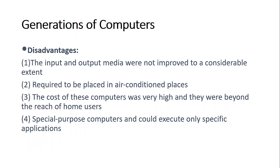The second generation had some disadvantages. This was the era where we had input and output devices, but they were not really practical — they were not improved enough to execute the tasks needed. They also required air conditioning since they still emitted a lot of heat and had to be placed in air-conditioned places. These computers were also very costly, so most people could not afford them, and they were still special purpose computers.